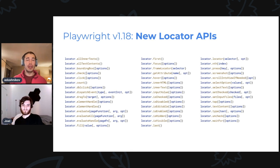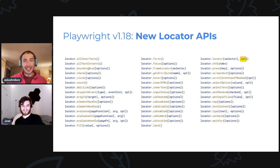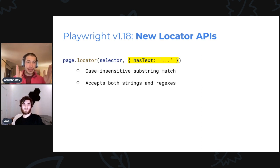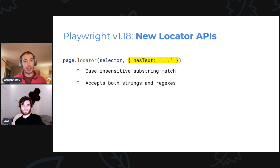In 1.18, we add a new thing. It is tiny on this screen, but it is actually huge in its value. We're changing the Locator constructor — there is now a second argument to the Locator constructor. Inside of this argument, you can pass a text, and this will create a Locator that selects an element with that text inside. I feel like we can already do that with the text selector. Yes, you can, but it's much more convenient using this second argument option.